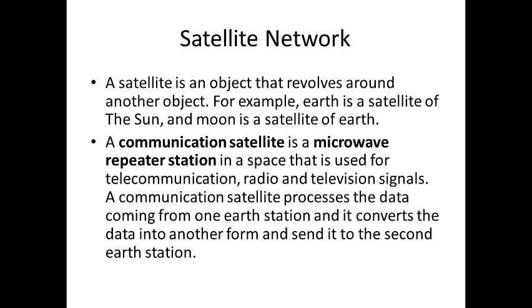The next topic in mobile computing is the satellite network. A satellite is an object that revolves around another object — for example, Earth is a satellite of the Sun and the Moon is a satellite of Earth. A communication satellite is a microwave repeater station in space used for telecommunication, radio, and television signals. It processes data coming from one earth station, converts it, and sends it to a second earth station.